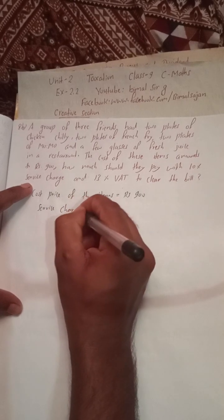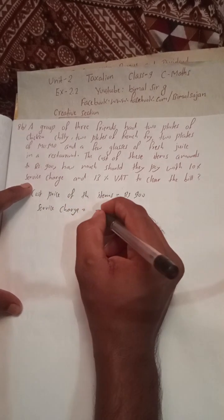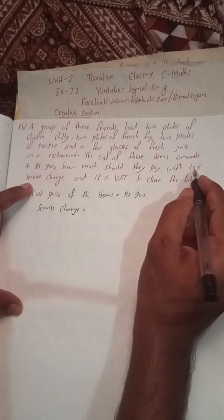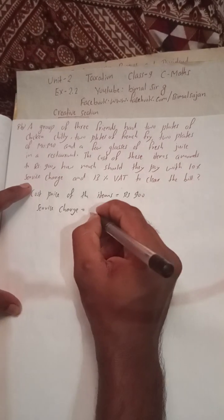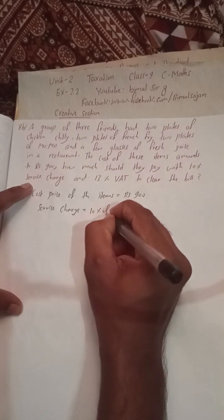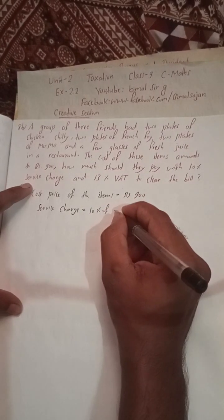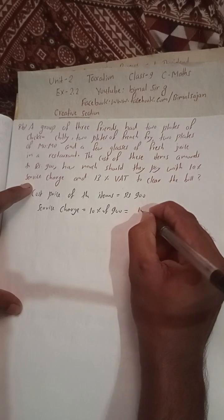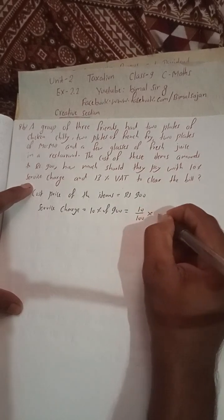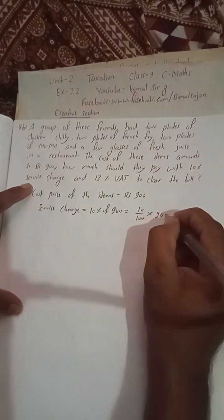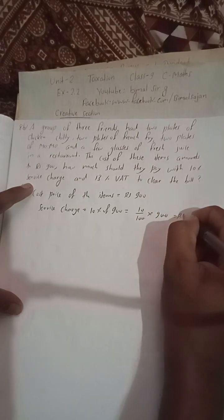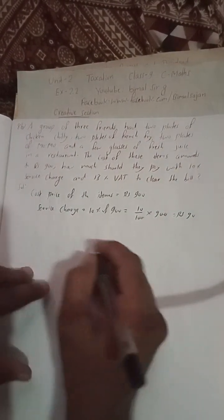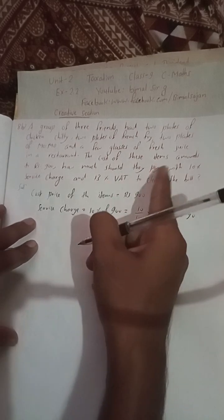The rate of service charge is 10 percent. So service charge equals rate into cost price, which is 10 percent of Rs 900. That is 10 divided by 100 into 900. The zeros cancel, giving us Rs 90 as the service charge.